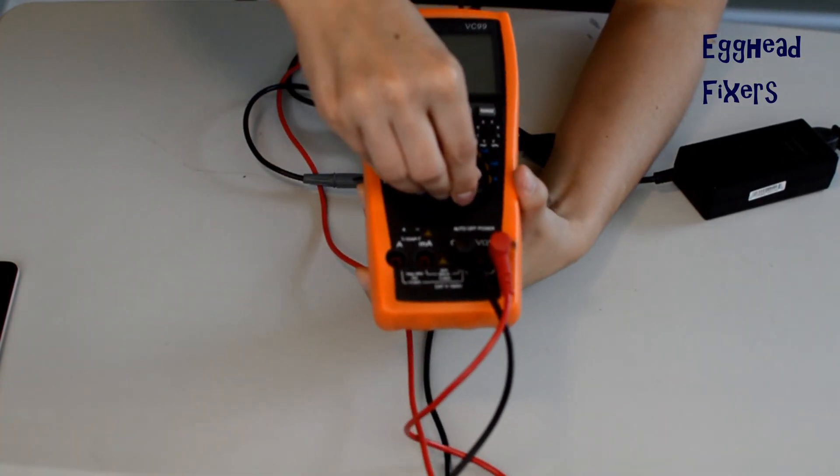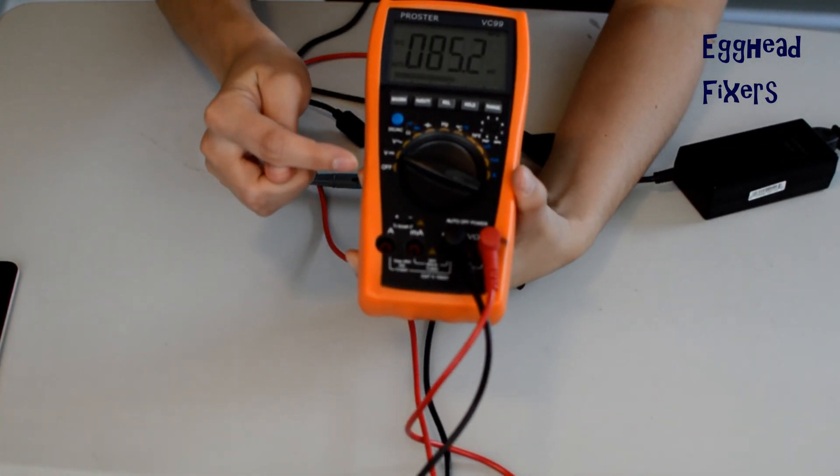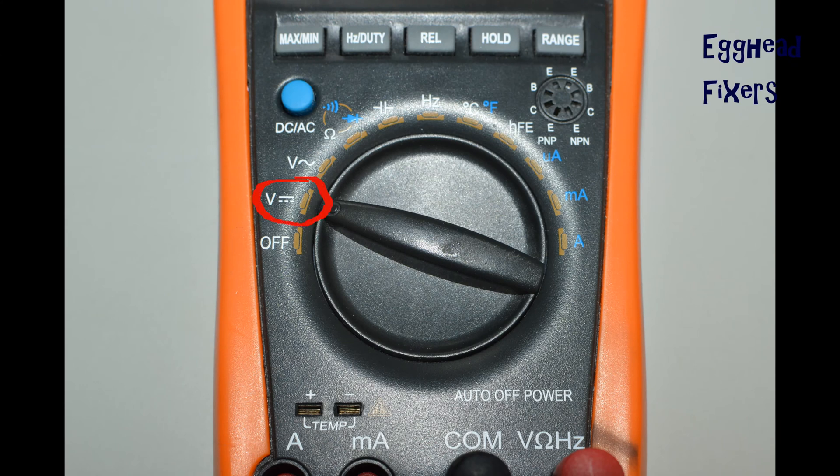First step in testing your charger, take your multimeter, look at the dial, and select this setting right here.